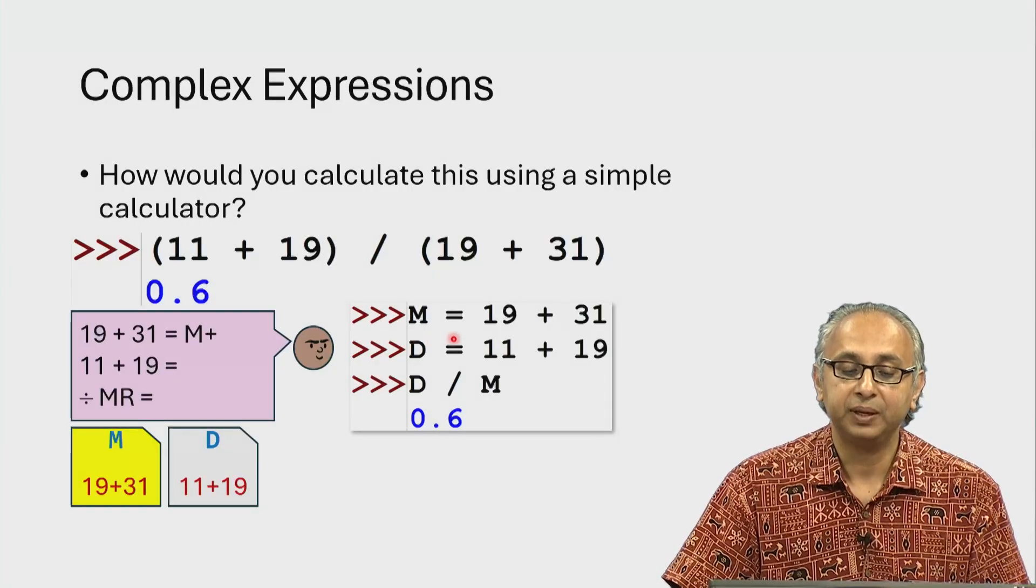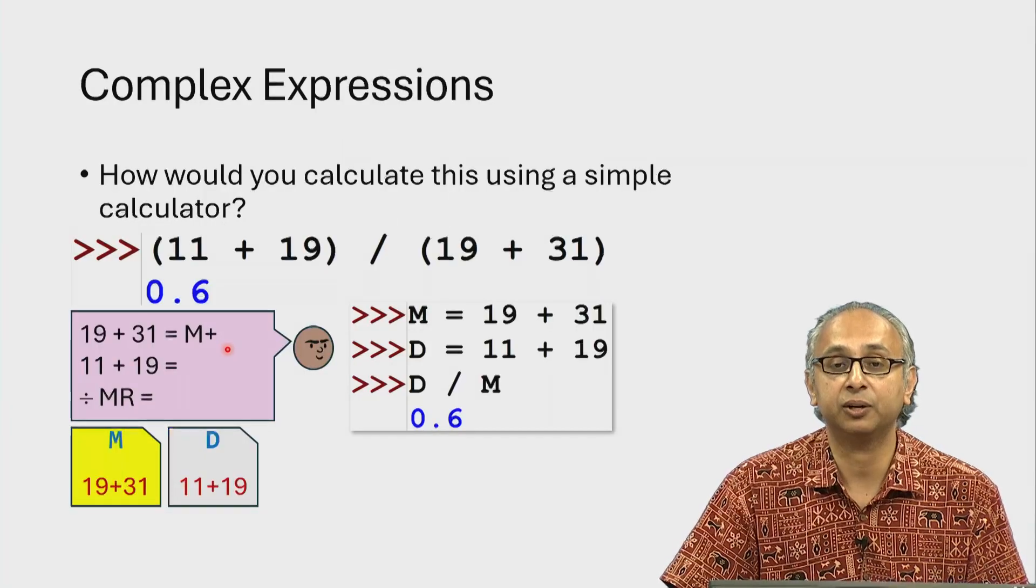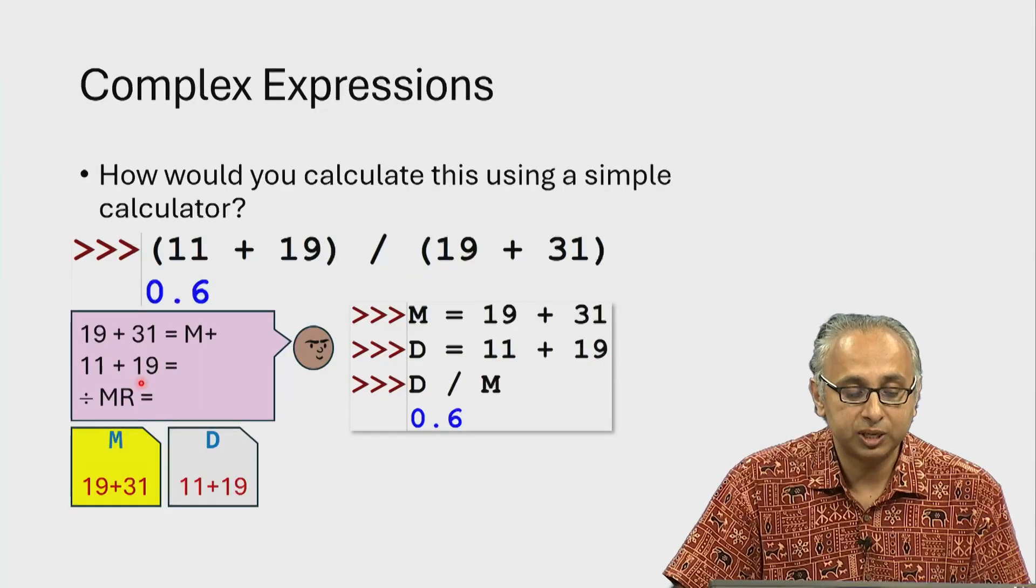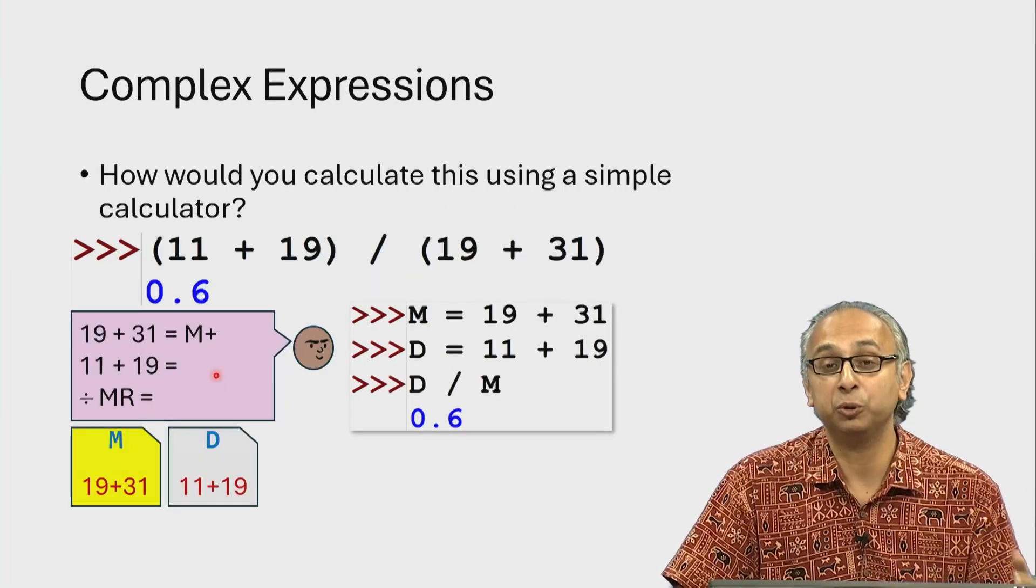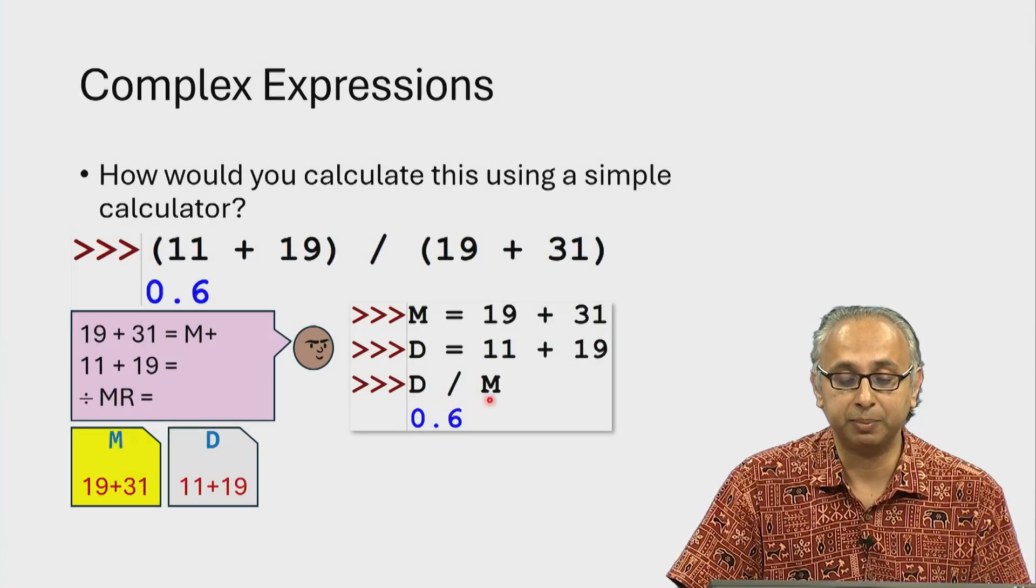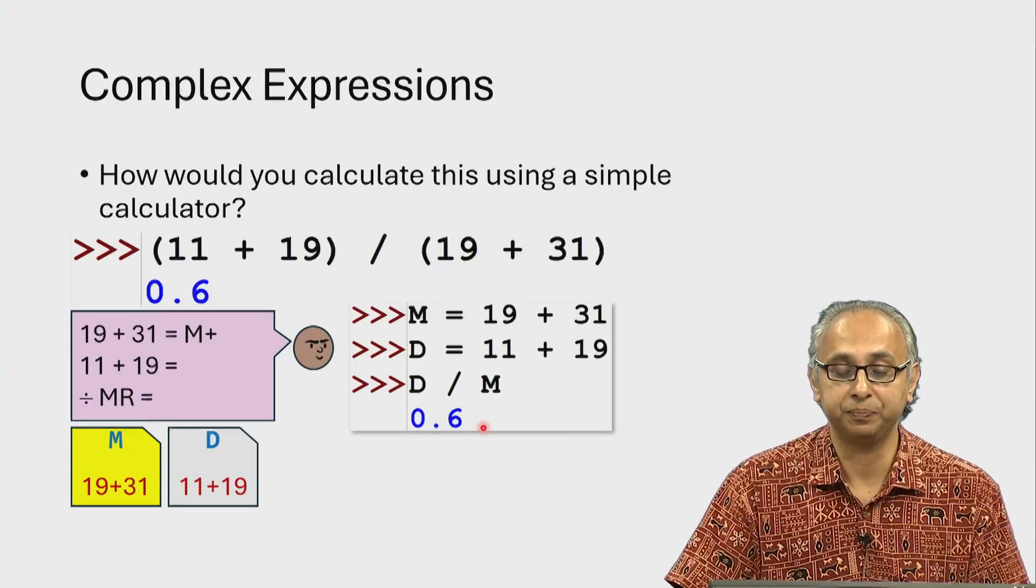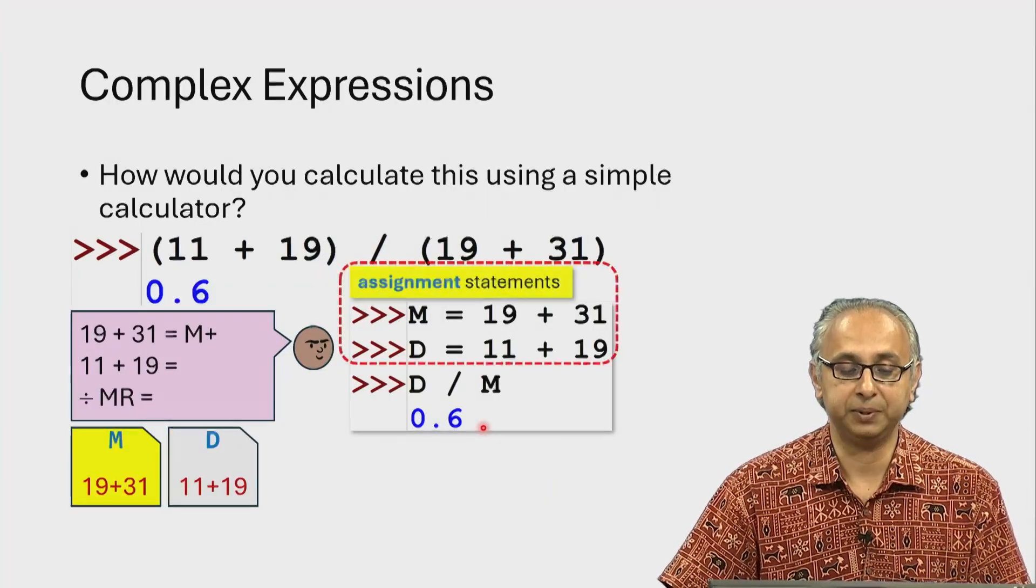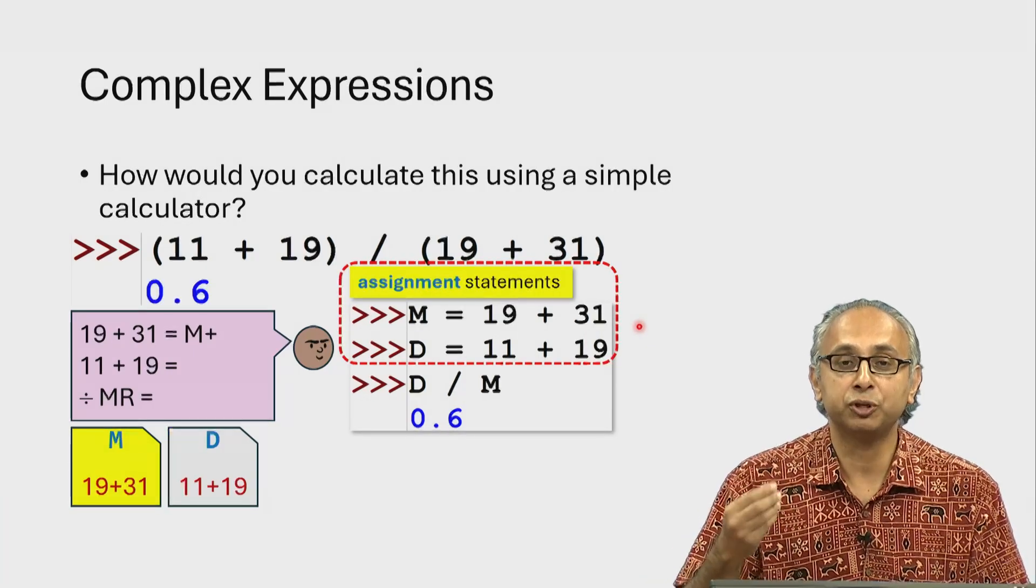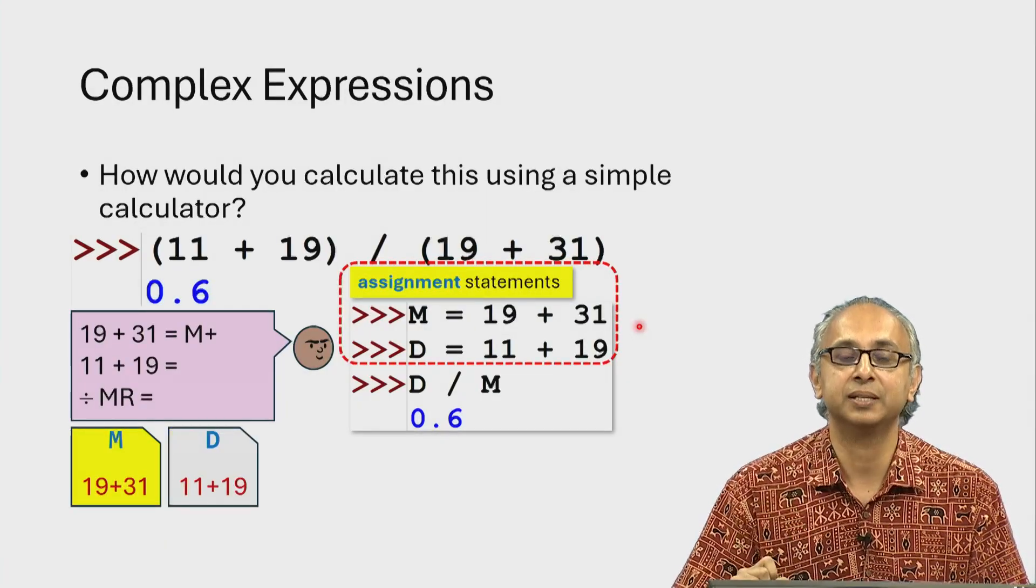You would say M equals 19 plus 31 which simulates this calculation. Then you would say D equals 11 plus 19 which simulates calculating the value that was displayed. And then you would take the ratio D divided by M and that expression would evaluate to 0.6. So these two statements are called assignment statements and we will spend most of today's lecture understanding this key idea of assignment statements.